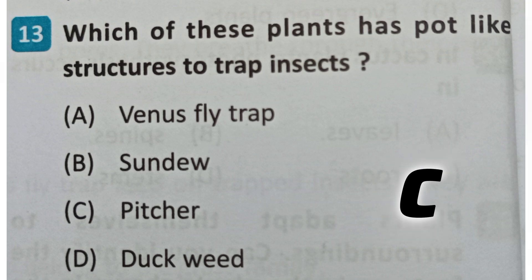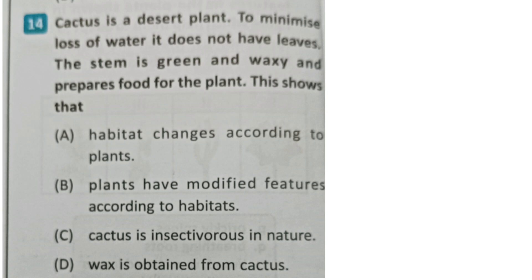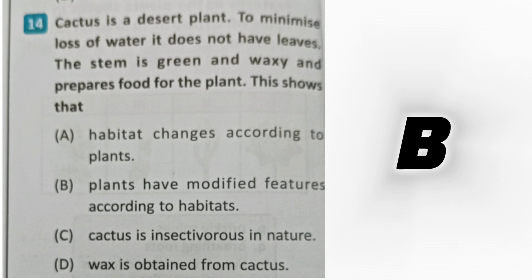Next question: Cactus is a desert plant. To minimize loss of water, it does not have leaves. The stem is green and waxy and prepares food for the plant. Which statement is true? Options: habitat changes according to plant; plants have modified features according to habitats; cactus is insectivorous in nature; wax is obtained from cactus. The correct answer is B - plants have modified features according to habitats.